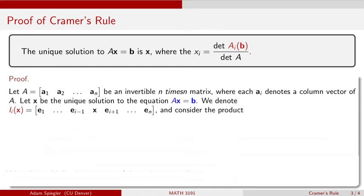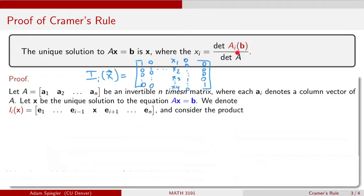Now let's denote the following matrix: capital I with a subscript of lowercase i evaluated at vector X. Using this notation, which is similar to the A sub i(B) notation, this means take the i-th column of the n-by-n identity matrix and replace it with vector X. So my first column of the identity matrix is the standard vector E1, then E2, and so on, and the only change is replacing the i-th column with whatever vector X is.